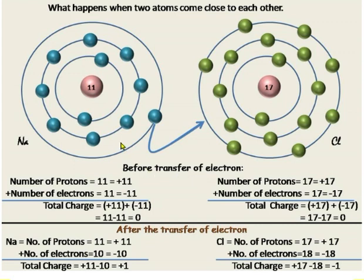Before the transfer of electrons, for sodium: number of protons = 11, so charge due to protons = +11; number of electrons = 11, so charge due to electrons = −11; total charge = +11 + (−11) = 0. For chlorine: protons = 17, charge = +17; electrons = 17, charge = −17; total charge = 0. So the total charge of any atom is zero, because the number of protons equals the number of electrons.